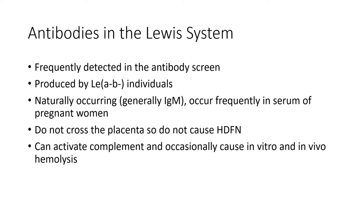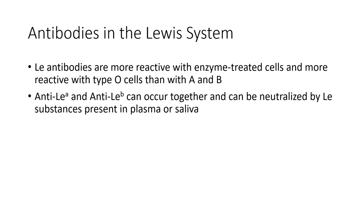Antibodies to the Lewis system are frequently detected in the antibody screens and are produced by Lewis A and B negative individuals. These are usually naturally occurring IgM antibodies and are frequently found in the plasma of pregnant women. These do not cross the placenta and they do not cause hemolytic disease of the fetus and newborn. They can activate complement, and occasionally cause in vitro and in vivo hemolysis. Lewis antibodies are more reactive with enzyme treated cells and more reactive with type O cells than type A and B.